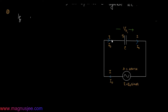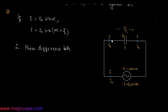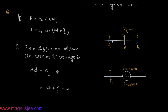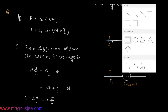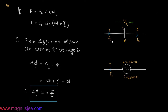Now we find the phase difference between the current and voltage in this circuit. If e = e0·sin(ωt), then i = i0·sin(ωt + π/2). The phase difference is given by Δφ = φ_i − φ_e = (ωt + π/2) − ωt. Therefore, Δφ = +π/2.